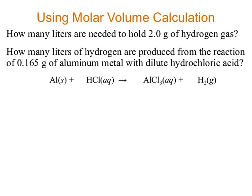Now let's look at another one. What are we solving for? Liters of hydrogen gas. But I'm starting with 0.165 grams of aluminum. Are the measurements changing? Grams to liters — yes. Is aluminum the same thing as hydrogen? No. Which means what else do I have to do? A substance conversion. Minimally, I have two conversions to go through.